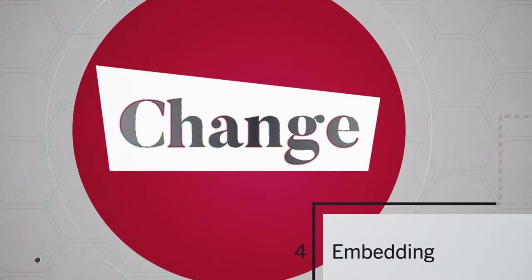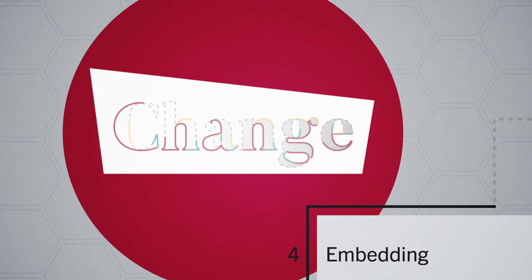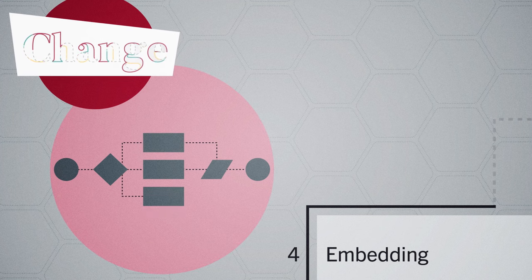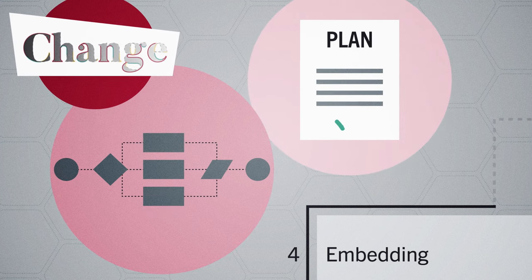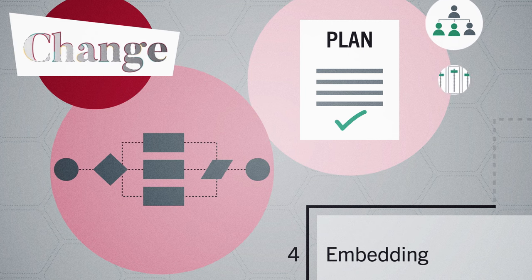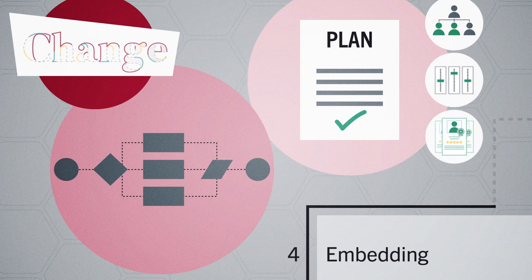Step four is embedding change within the company culture and practices. This is particularly important for organizational change related to processes, workflows, and strategies. Without an adequate plan, employees can backslide into the old way of doing things, particularly during the transitory period. New organizational structures, controls, and reward systems are all tools that help change stick.